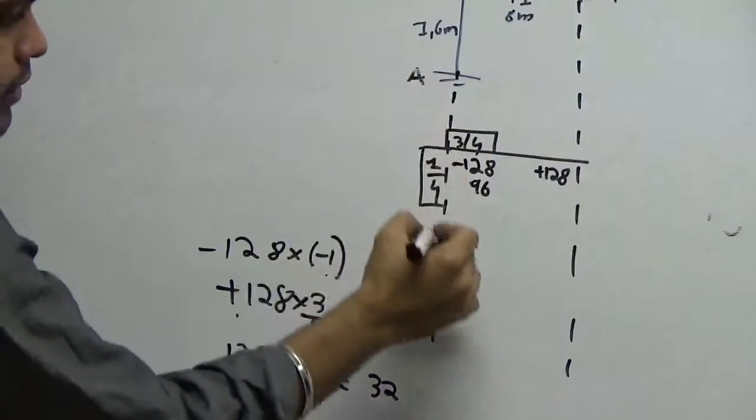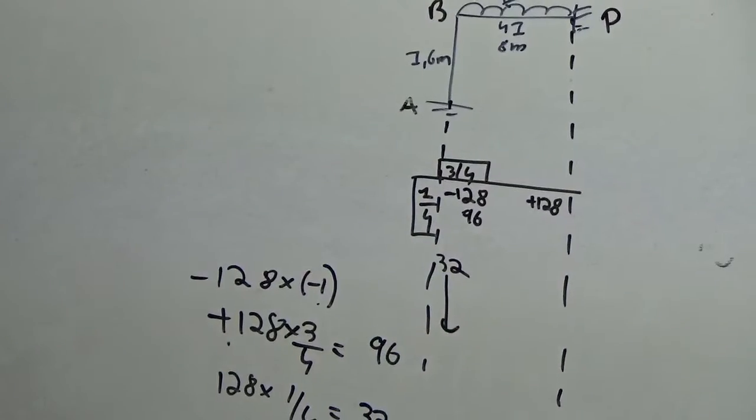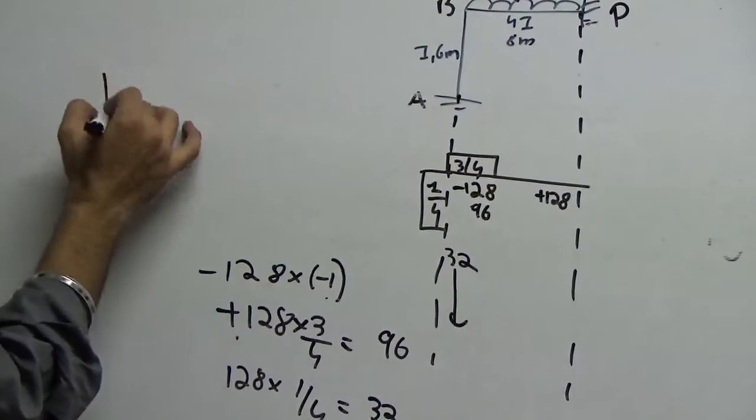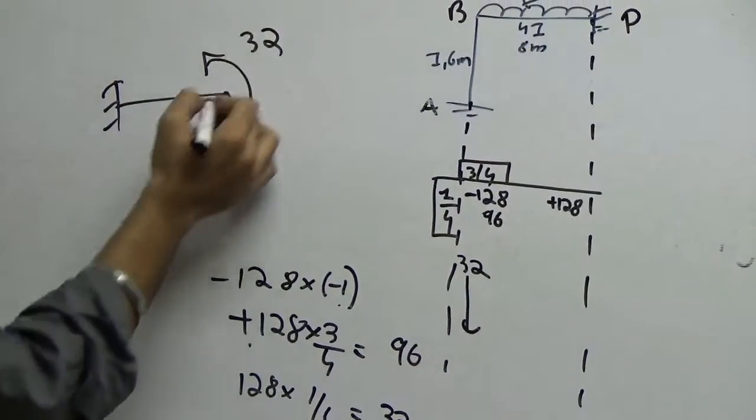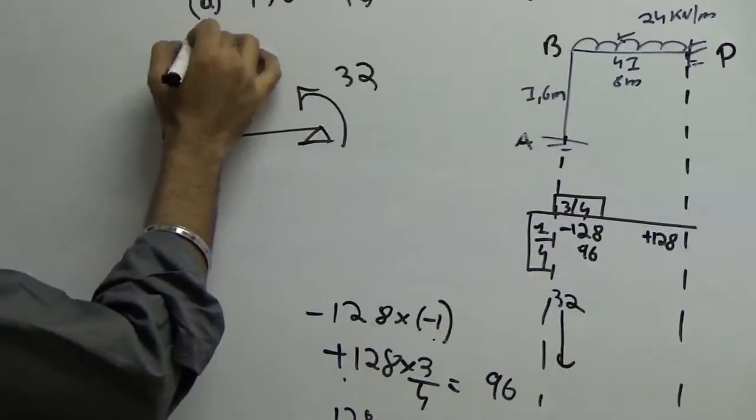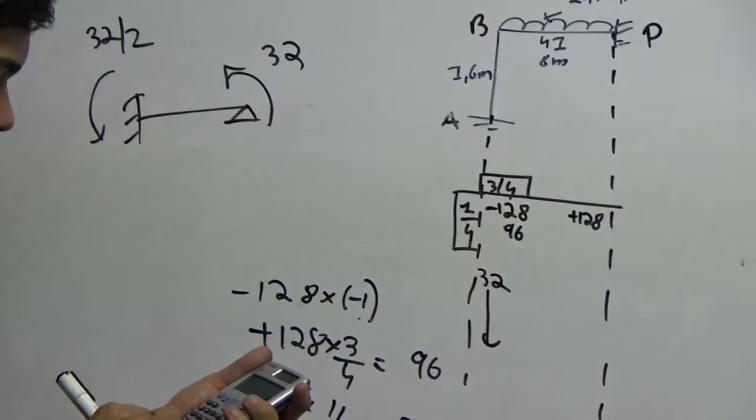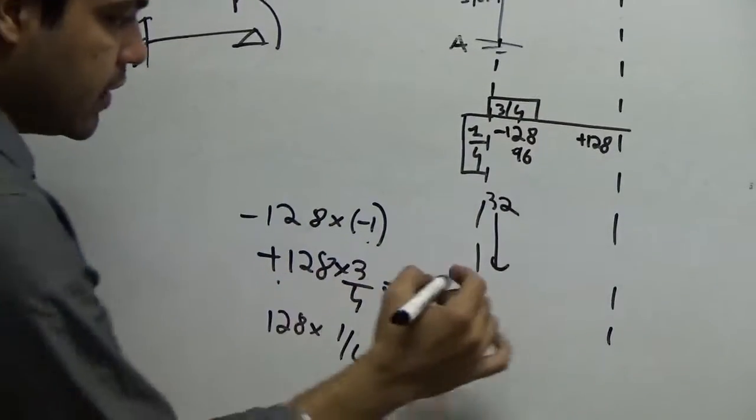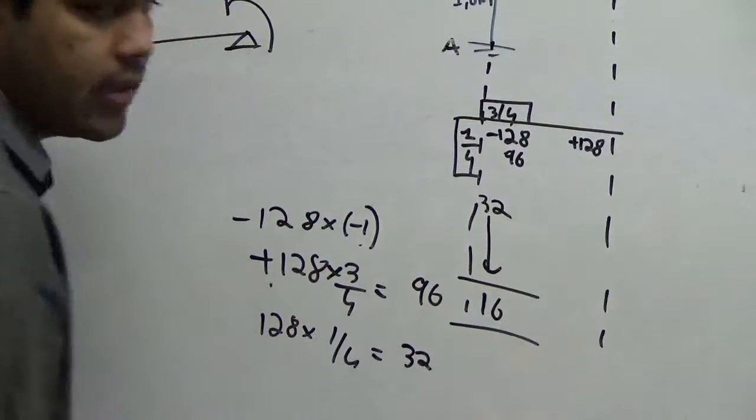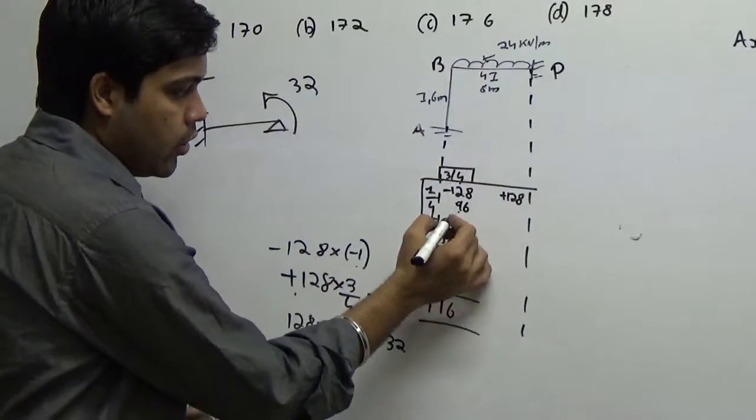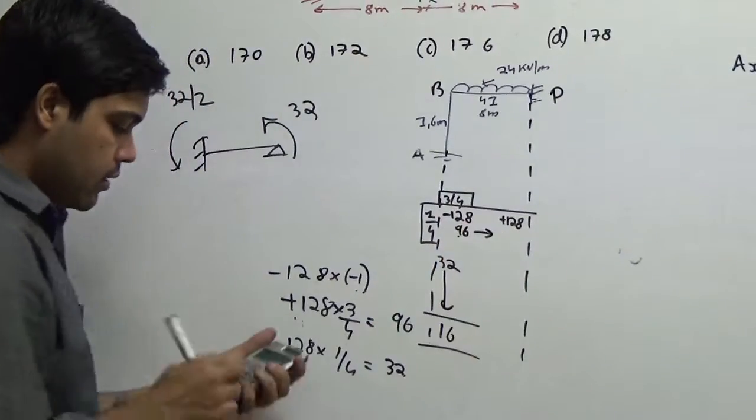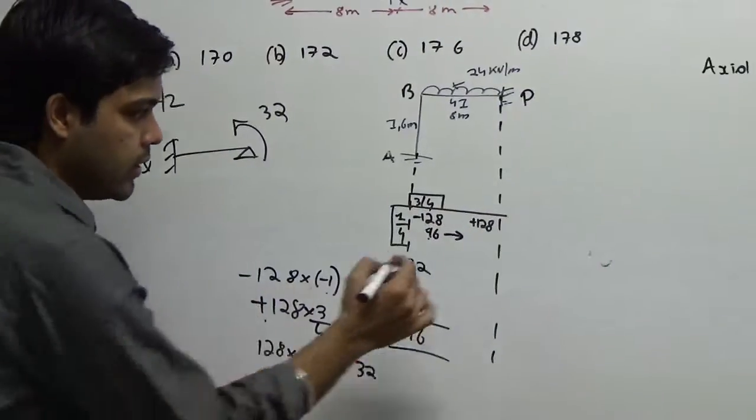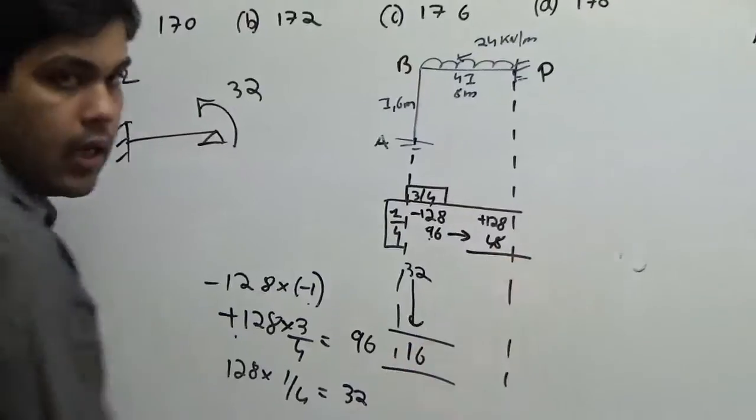So here I will write 96 and for this column I will write 32. Since this end is fixed, this will carry over half its value. Remember the concept of far end fixed and near end hinge, a moment is applied of 32. How much will be transferred? 32 by 2. So that's what I'm writing here. 32 by 2 gives me 16. Actually I'm not interested in this right now. So this is 96. If this is 96, this will be transferred here, 96 by 2, that is 48.